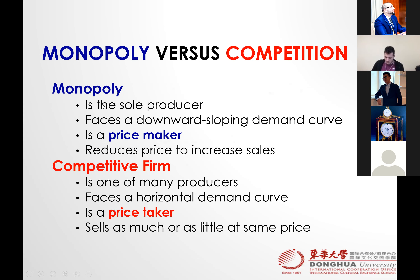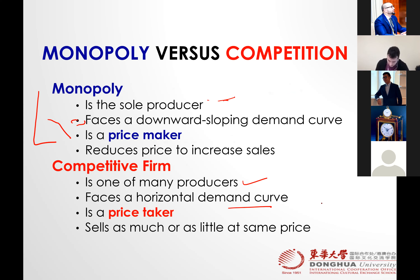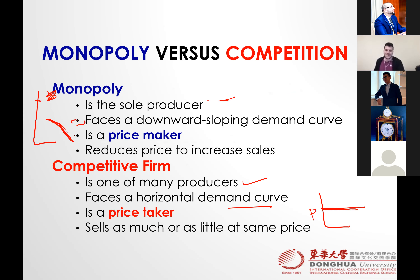The comparison between competition and monopoly: monopoly is a sole producer, while in competitive markets there are many producers. The monopoly demand curve is downward sloping, following the law of demand. The demand curve for competition is a horizontal straight line because the product is largely the same and everybody is a price taker. For monopoly the demand line is downward sloping, so monopoly is a price maker, while competitive firm is a price taker.